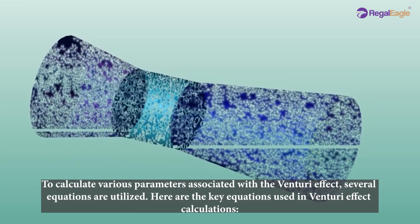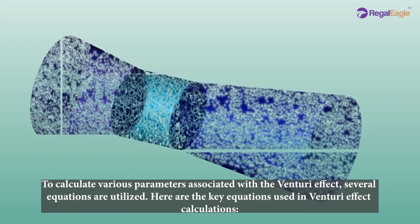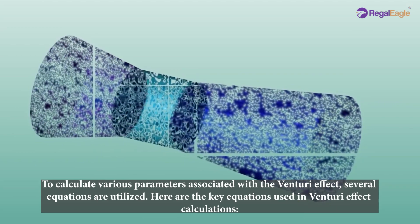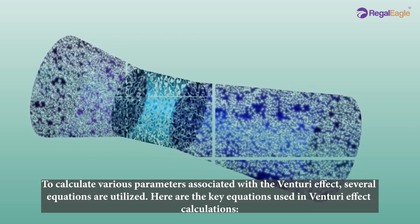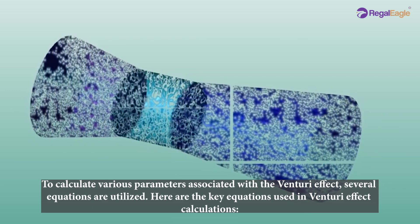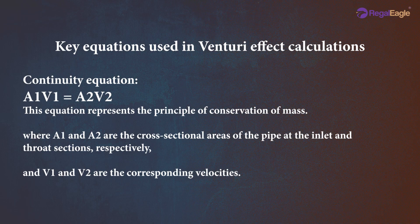To calculate various parameters associated with the venturi effect, several equations are utilized. The continuity equation, A1V1 equals A2V2, represents the principle of conservation of mass, where A1 and A2 are the cross-sectional areas of the pipe at the inlet and throat sections respectively, and V1 and V2 are the corresponding velocities.